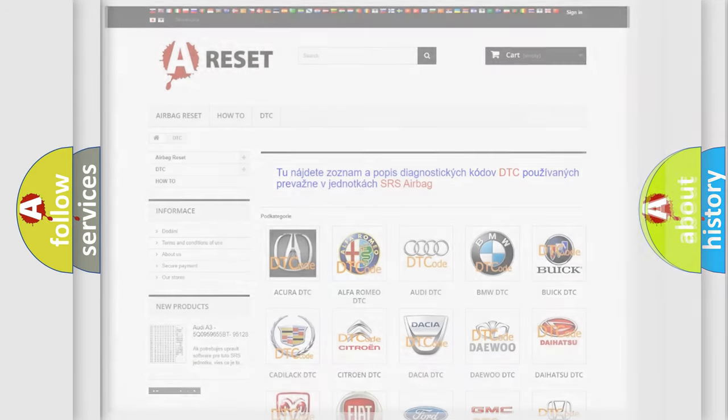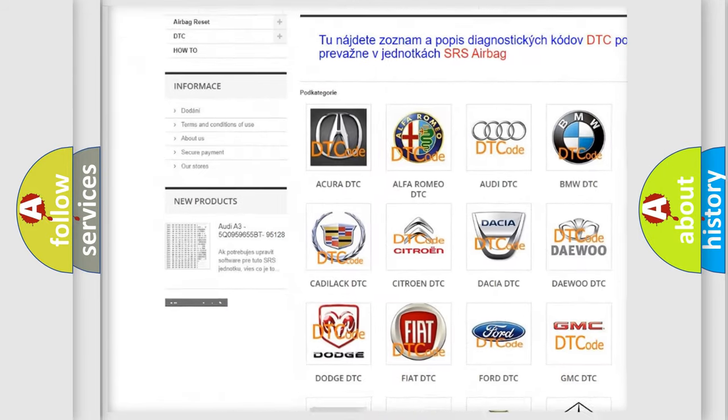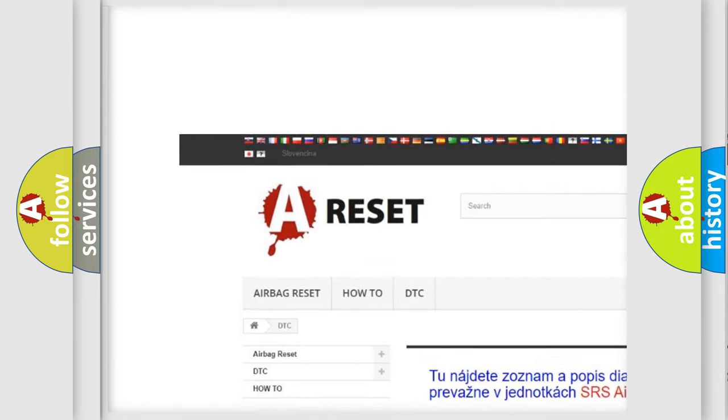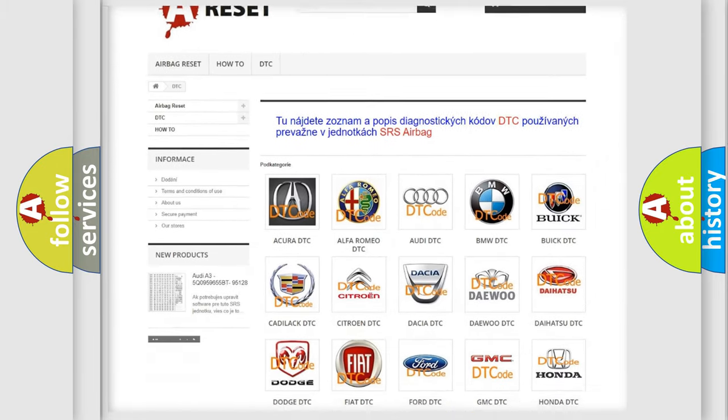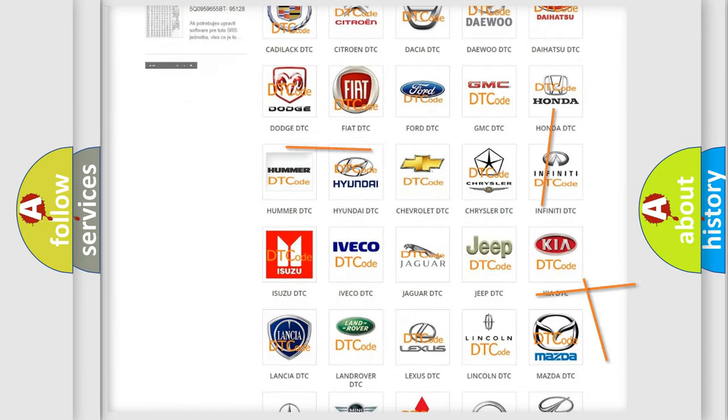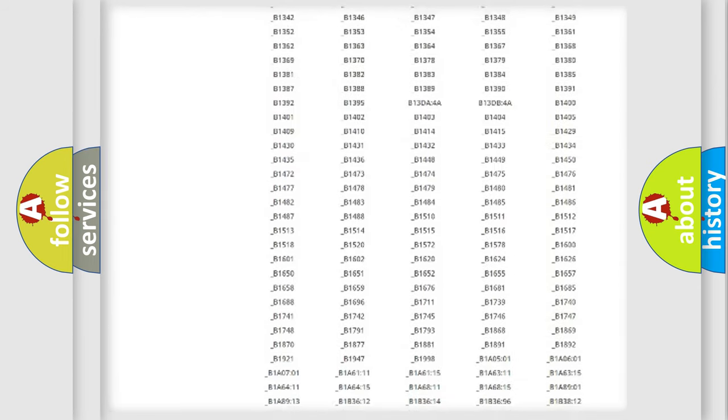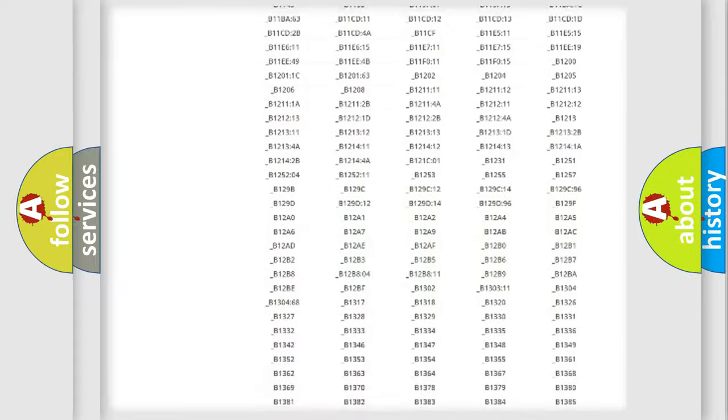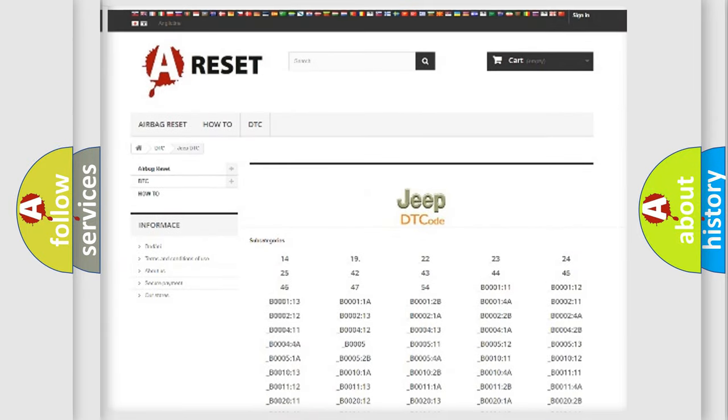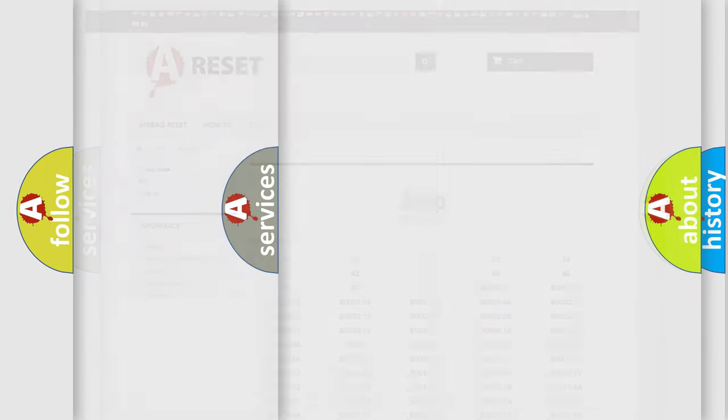Our website airbagreset.sk produces useful videos for you. You do not have to go through the OBD2 protocol anymore to know how to troubleshoot any car breakdown. You will find all the diagnostic codes that can be diagnosed in Jeep vehicles, and also many other useful things.